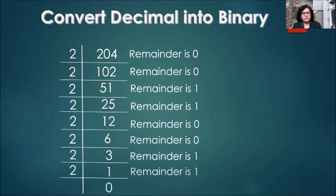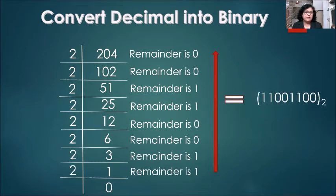Here, I have taken a decimal number 204 and shown the steps to convert it into binary. Students, remember one thing. If we have to convert a number into binary, we will always divide the number by 2. As binary is always base 2, we have taken decimal number 204.